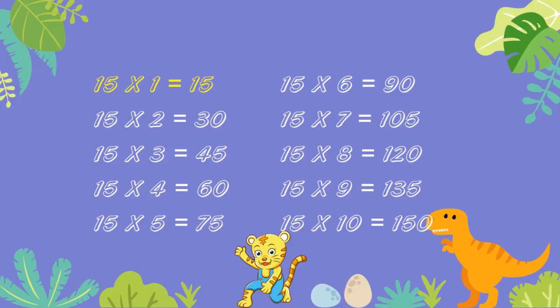15 ones are 15. 15 twos are 30. 15 threes are 45. 15 fours are 60. 15 fives are 75. 15 sixes are 90. 15 sevens are 105. 15 eights are 120. 15 nines are 135. 15 tens are 150.